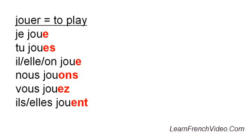Notice that in the first three persons — I, you, and he and she — the pronunciation is all the same. Except for tu, you add an S which you don't pronounce. So to say we play, we say nous jouons. O-N-S. So that O-N-S is pronounced 'on.' Nous jouons.